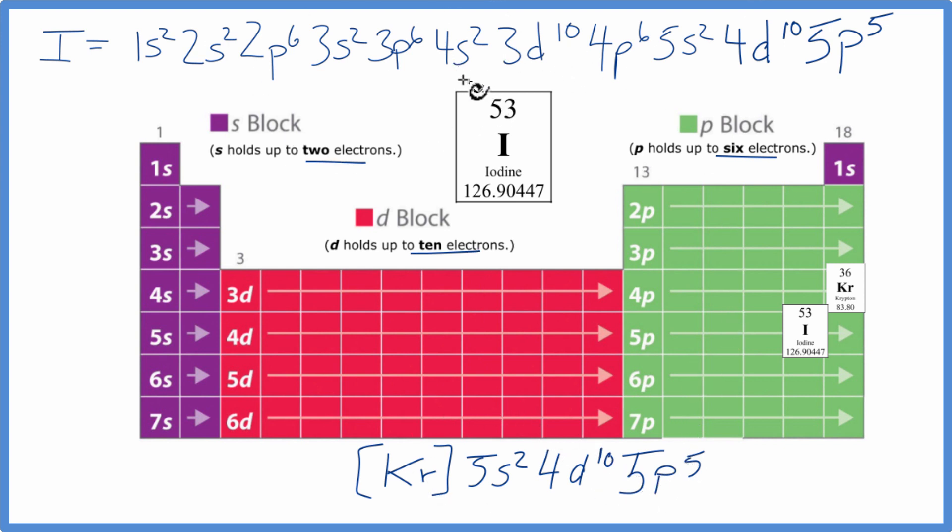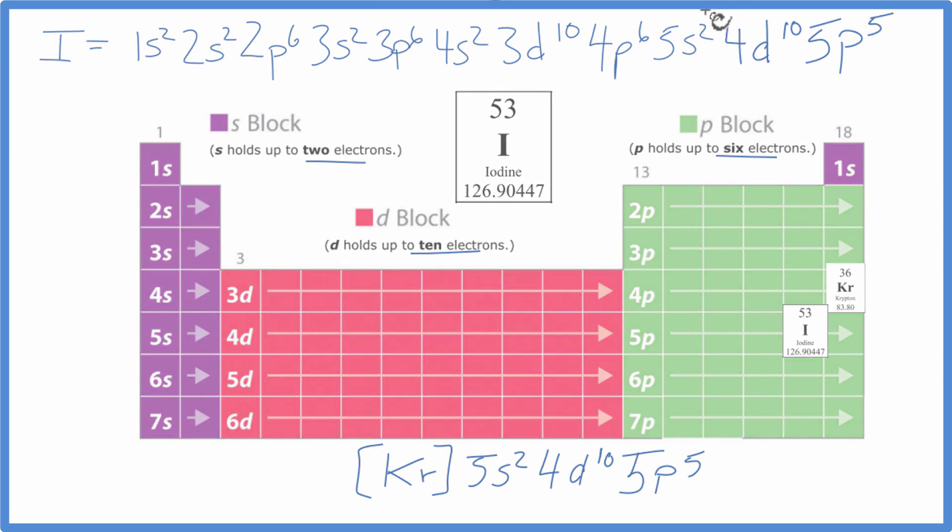You should also note that the 4s, that came before the 3d. That is correct. Their energies are very similar. So you'll see it written this way quite often. You'll also see it reversed where the 3d comes before the 4s. Usually in school, we see it this way. This is Dr. Butte, the electron configuration for iodine, and thanks for watching.